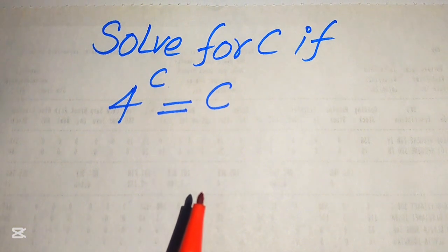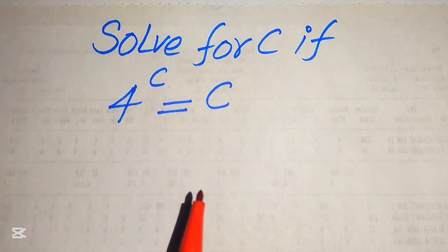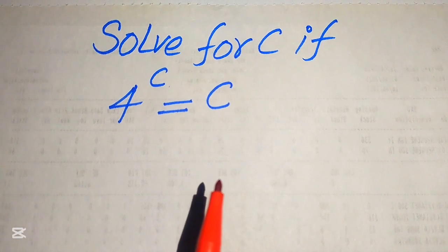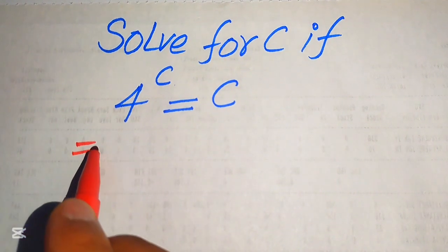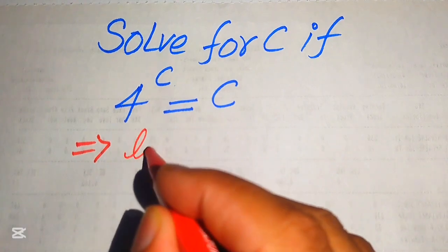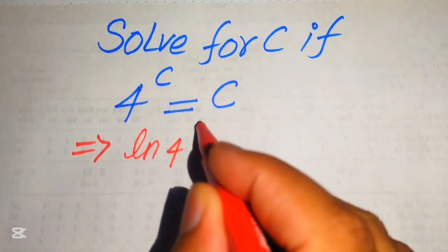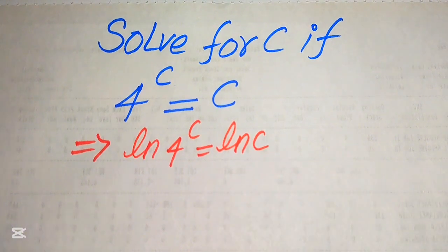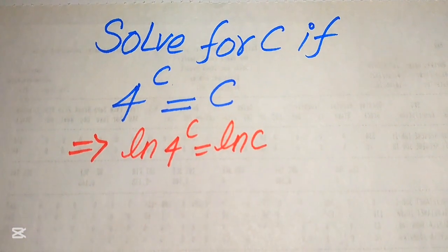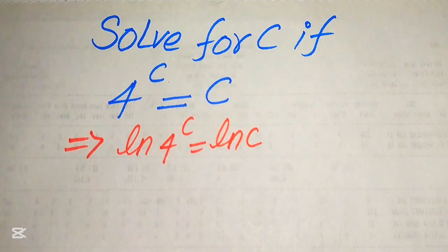The very first thing we are going to do is take the log on both sides. We will apply the natural log on both sides, so it will be written as the natural log of 4 to the power of c is equals to the natural log of c. And here we use the properties of natural log.